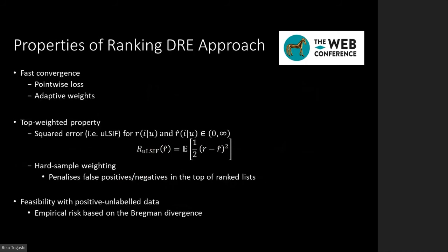We summarize the properties of our proposed ranking DRE approach. First, our approach can achieve fast convergence of model training due to the pointwise loss. The adaptive weighting strategy also contributes to convergence speed by weighing samples with larger losses. Second, our proposed risk has the top-weighted property. Because density ratios are non-negative and can take large values, squared error between density ratios concentrates on samples with large density ratios, that is, samples in higher rank positions. Furthermore, our hard sample weighting strategy penalizes false positives and negatives at the top of ranked lists. Third, our proposed risk can be empirically approximated with positive and unlabeled data, such as implicit feedback.